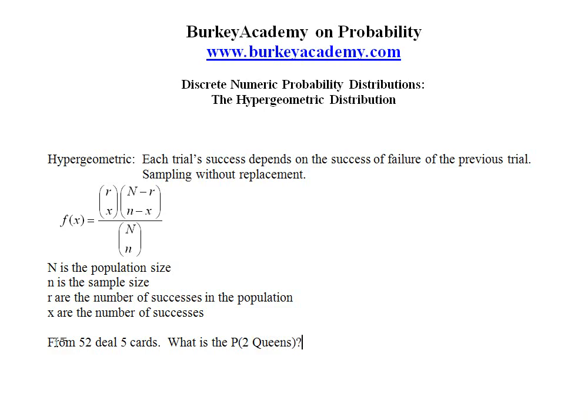So what do we have to identify? Well big N is the population size we're choosing from. How many are we choosing from in this situation? 52. Little n is the sample size. That's how many am I choosing from the population? In this case that's five. I'm dealing you five cards from the 52.